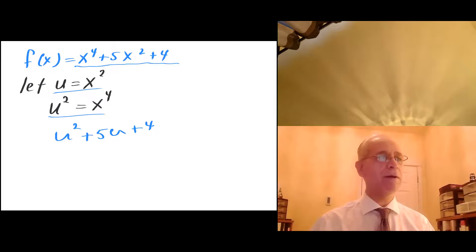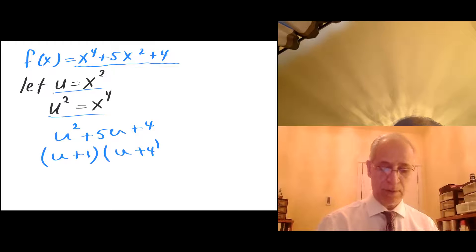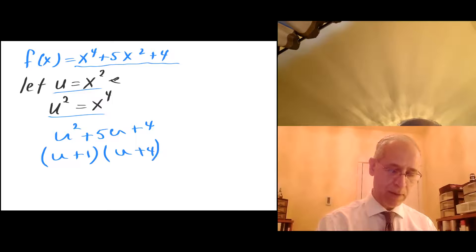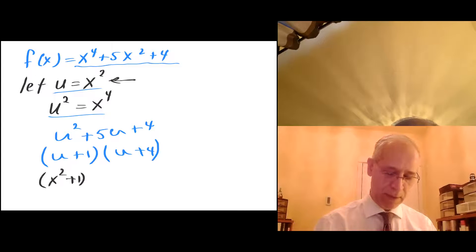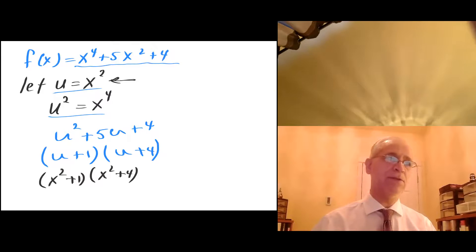I need to factor this trinomial — I need two numbers that add up to 5 and multiply to 4, and that is u plus 1 times u plus 4. Now I remember that u is x squared, so this becomes x squared plus 1 times x squared plus 4.